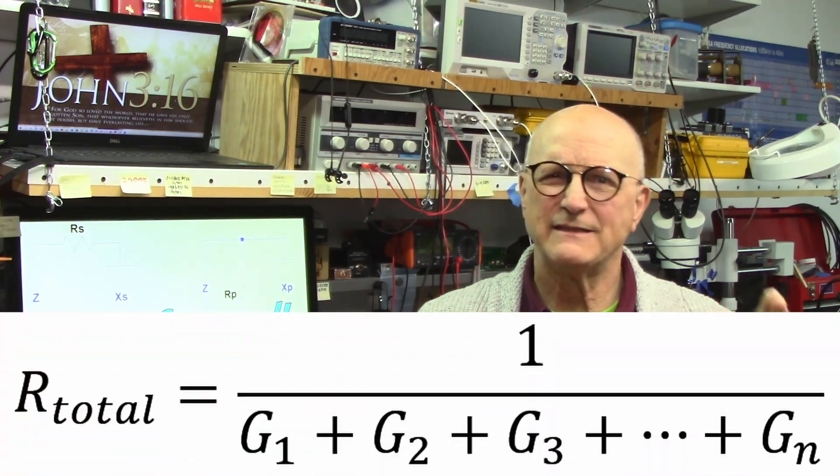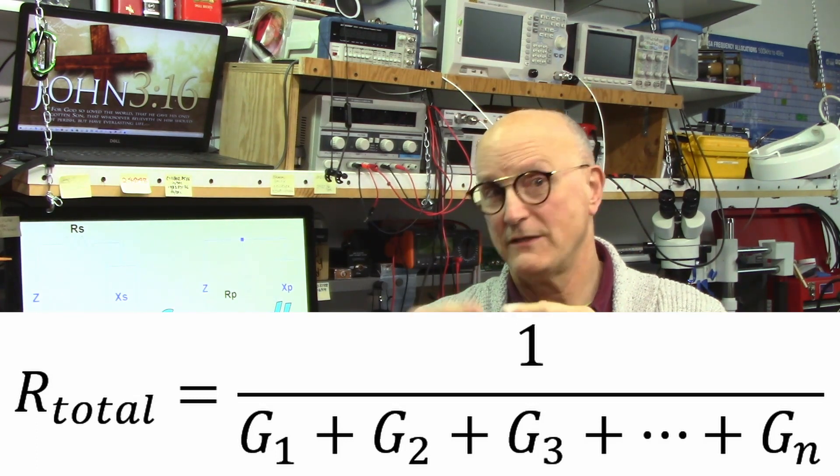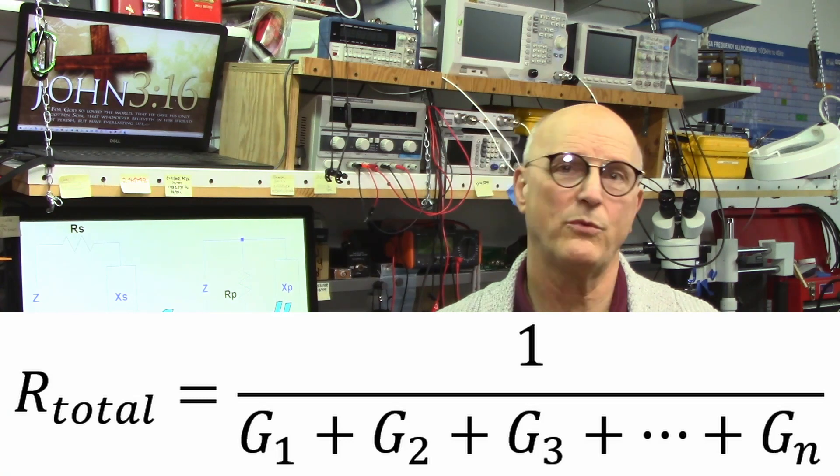So why do I even care about this? This parallel equivalent resistance and reactance gives us opportunities to simplify the process of coming up with ways to achieve our impedance goals for matching and modification. To help us understand this, let me go back to the network of parallel resistors. We added conductances together to get the total conductance, and then converted it to resistance to get our total equivalent resistance.